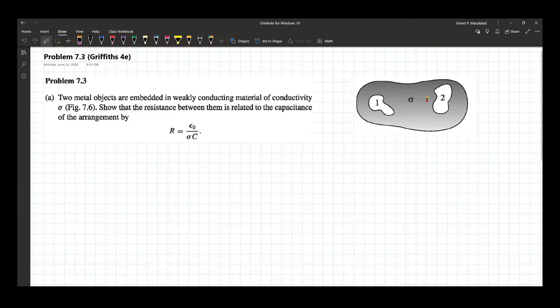Show that the resistance between them is related to the capacitance of the arrangement by R equals epsilon naught over sigma C.